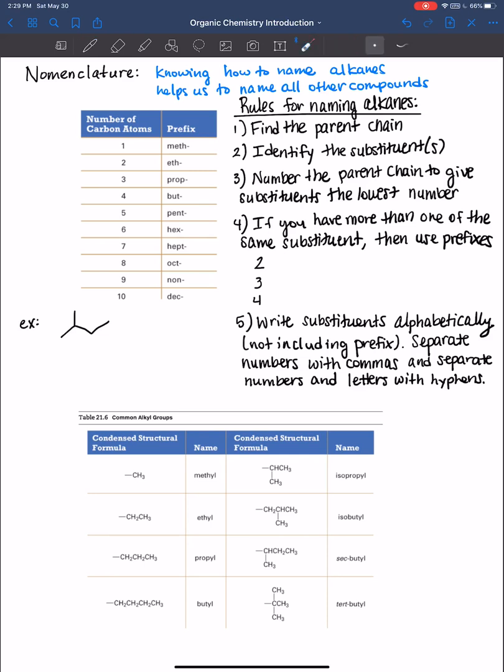So the first rule is to find the parent chain, and that's always based on the longest carbon chain. And so in this case here, the longest carbon chain is 1, 2, 3, 4. And I like to use a highlighter to highlight the longest carbon chain, because everything else will just be branches off of that chain.